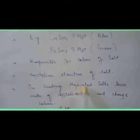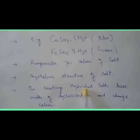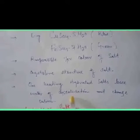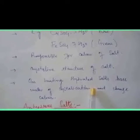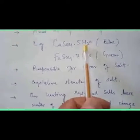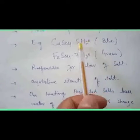When hydrated salts are heated, they lose water of crystallization and change color. For example, if we take copper sulfate pentahydrate and heat it, it loses its water of crystallization and changes color from blue to white. Similarly, ferrous sulfate heptahydrate also loses color when heated. We can say that all hydrated salts lose color when heated.